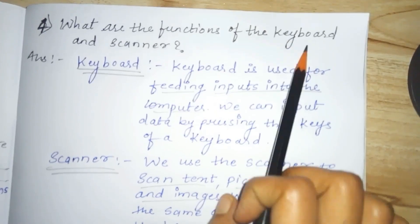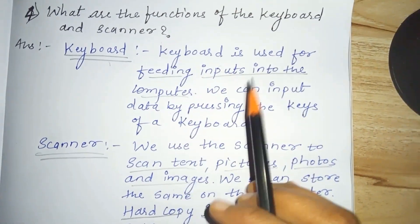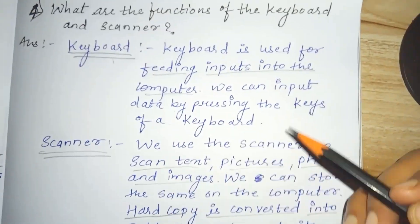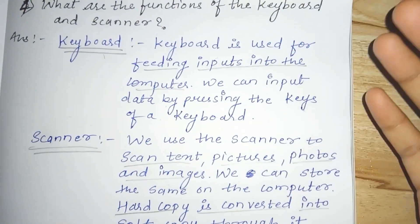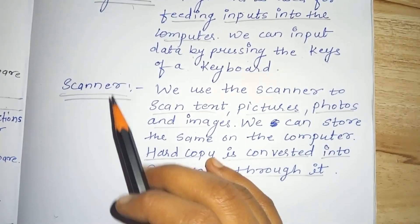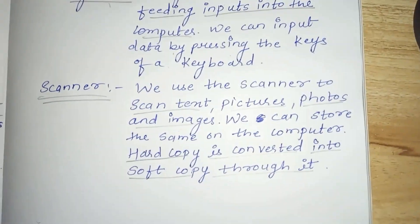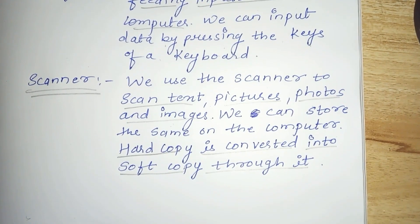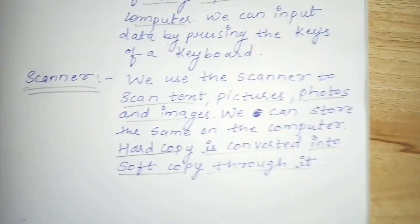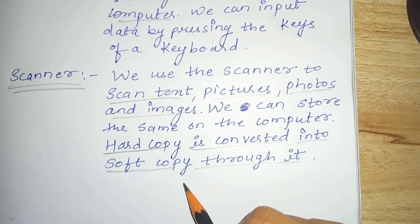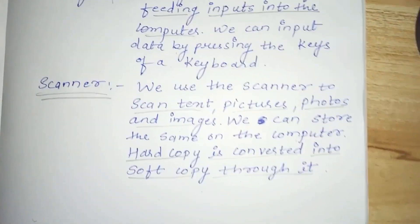Question number 4. What are the functions of the keyboard and scanner? Keyboard is used for feeding input into the computer — we can input data by pressing the keys of a keyboard. We type data, names, or numbers. For the scanner: we use the scanner to scan text, pictures, photos, and images. We scan our documents and images through the scanner and store them on the computer. Hard copy is converted into soft copy through the scanner.